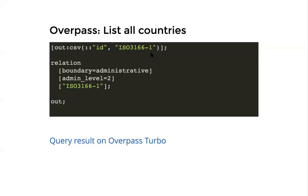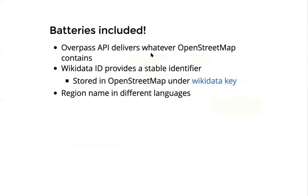Since this is OpenStreetMap with data provided by people all over the world, we can also get all the other metadata OpenStreetMap contains. One nice thing is that we can get the Wikidata ID, which gives a stable identifier for the regions. And depending on the use case, OpenStreetMap also stores names for all these regions in different languages, so we can extract this data together with the geometries.